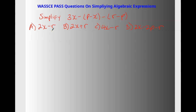An algebraic expression is operations together with numbers and the variables that make up an algebraic expression. With that said, we need to know some operations: negative times negative equals positive. You have to know that because we are going to need it. And negative times positive gives you negative, and positive times positive gives you positive.